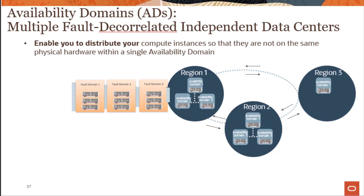When customers are deploying applications — for example in AD 1 in region 1 — the applications are automatically distributed across multiple physical nodes. Customers can choose a fault domain when deploying a virtual machine, or if they don't, Oracle intelligently distributes workloads across different physical compute nodes. So if a compute node goes down, not all applications go down because they are distributed across multiple physical nodes.